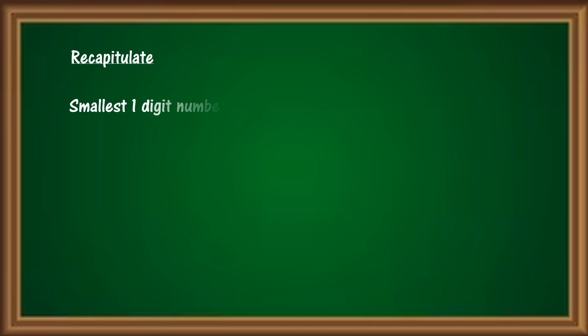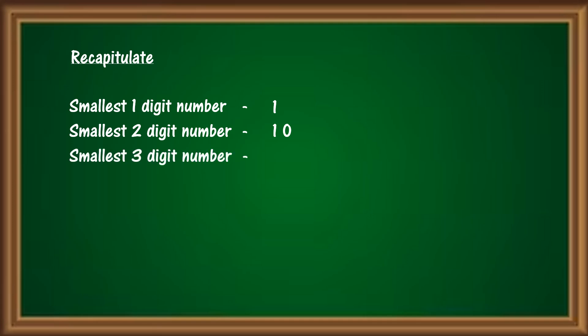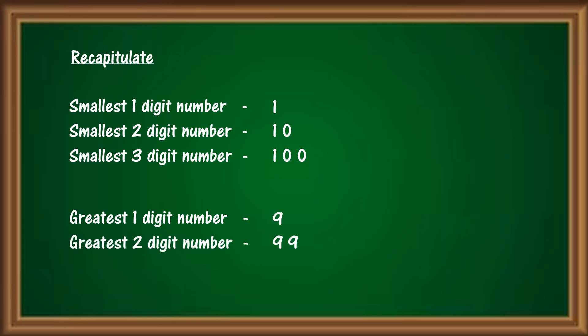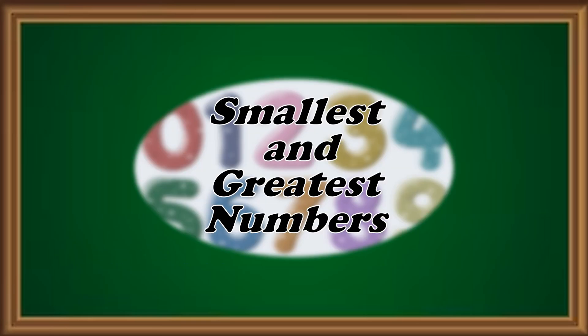Before we end, let's do a quick recapitulation. The smallest 1-digit number is 1. The smallest 2-digit number is 10. The smallest 3-digit number is 100. The greatest 1-digit number is 9. The greatest 2-digit number is 99. And the greatest 3-digit number is 999.